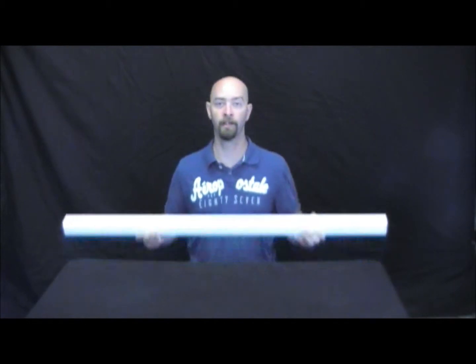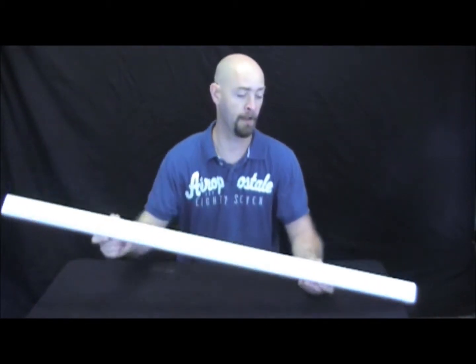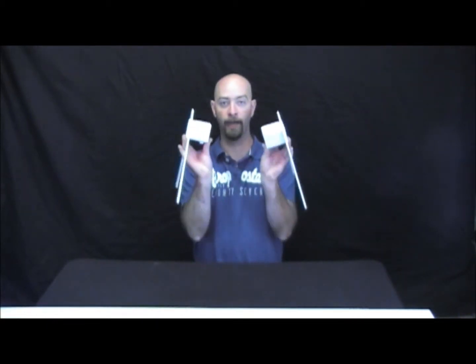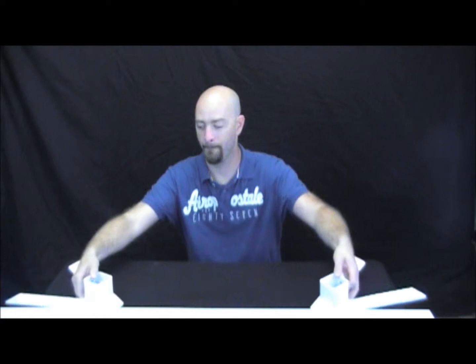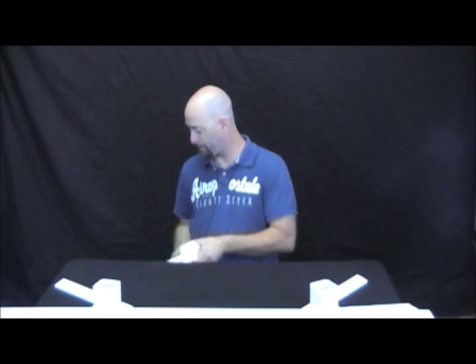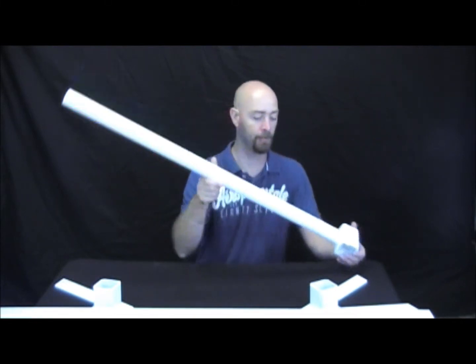Okay, today we are going to go over our roof mount wind turbine tower. What the kit comes with is a four foot square tubing, comes with two end caps, a center mass that your turbine actually mounts to.